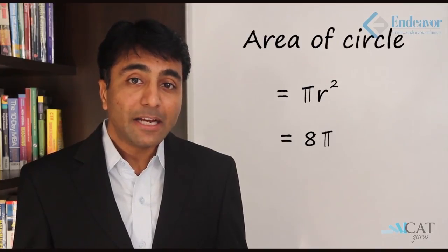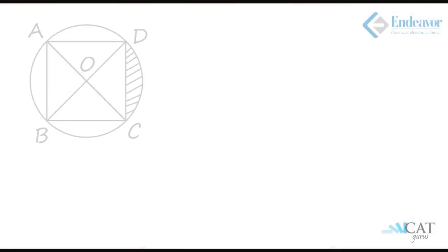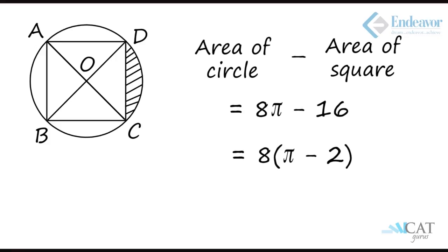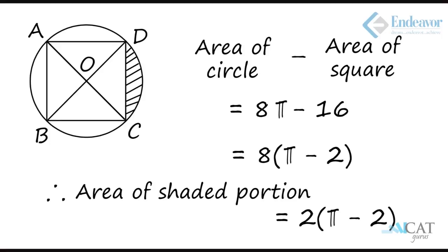The area of the entire circle is πr² = π × (2√2)² = 8π. From 8π I subtract the area of the square, which is 16, giving 8π − 16 = 8(π − 2) as the area of 4 segments. Since the question asks only about one shaded segment, I divide by 4 to get 2(π − 2), which equals 2π − 4. Hence our answer is 2π − 4.